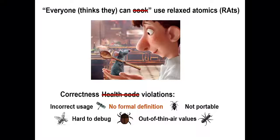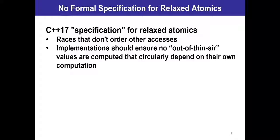So what exactly are relaxed atomics? The most up-to-date specification in C++17 refers to them as accesses that do not order any other accesses, and thus says that they can be reordered with any other memory operations to potentially improve performance and energy efficiency. However, this is not formalized, and the specification only provides a vague notion — wording rather — that implementations should avoid out-of-thin-air values, with no specification about how to actually do that. This makes it extremely difficult to use them correctly.